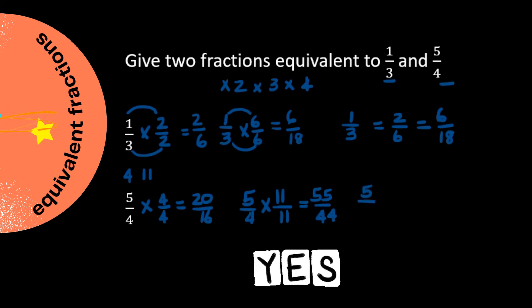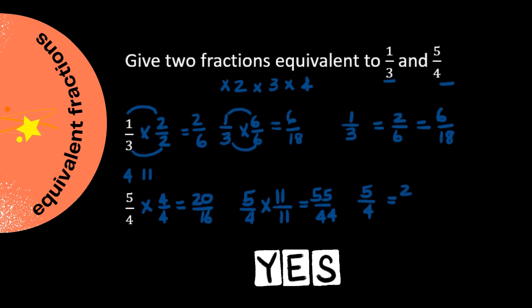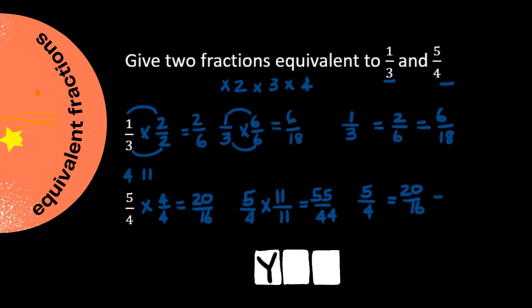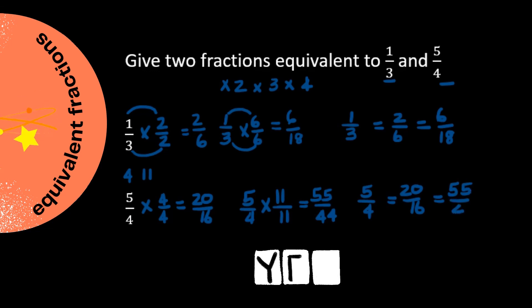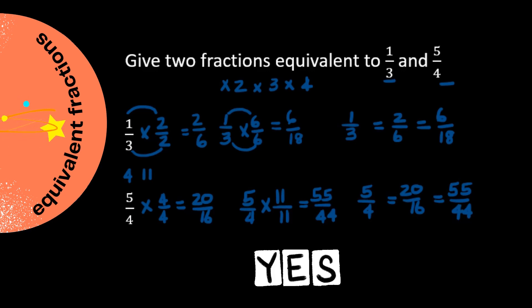Therefore, five over four is equal to twenty over sixteen, which is equal to 55 over 44. Now we have found two equivalent fractions for both one over three and five over four.